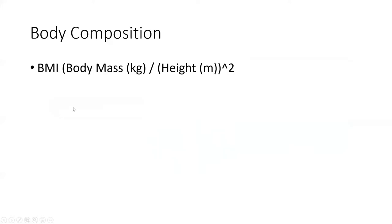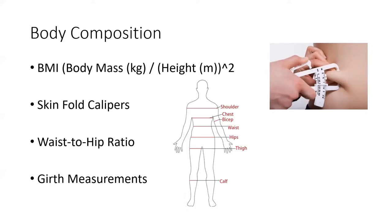For body composition, BMI is often not ideal for athletic populations because it doesn't assess percentage of adipose tissue — highly muscular athletes may be flagged as overweight despite low body fat. Better options include skinfold calipers, which are relatively cheap; waist-to-hip ratio as a general health indicator; and girth measurements, especially useful for tracking hypertrophy. Girth measurements at target locations are great ways to see how much size an athlete has gained.